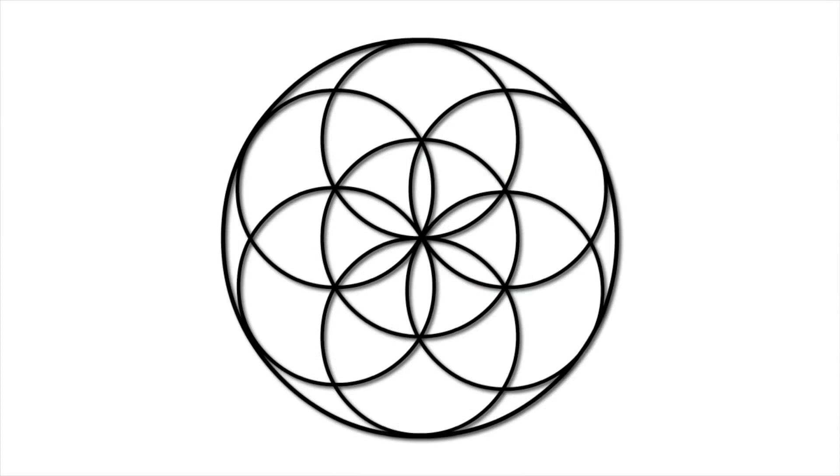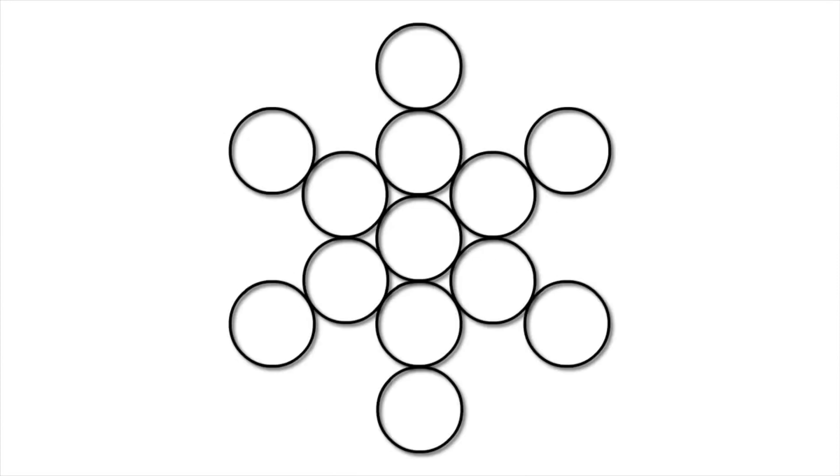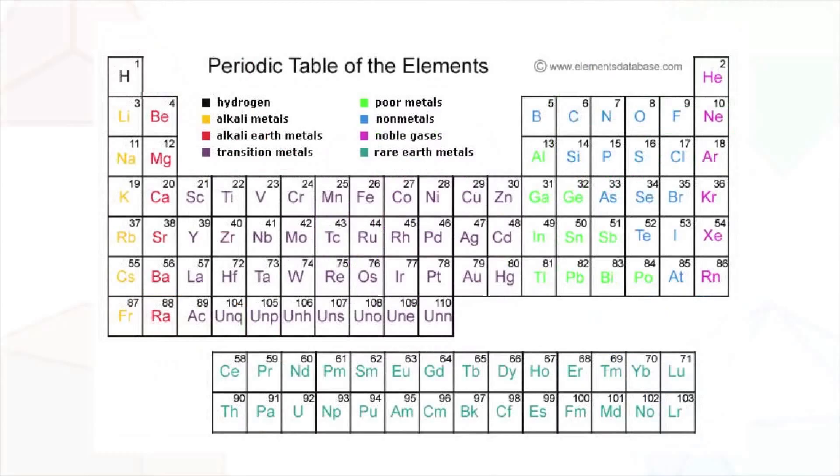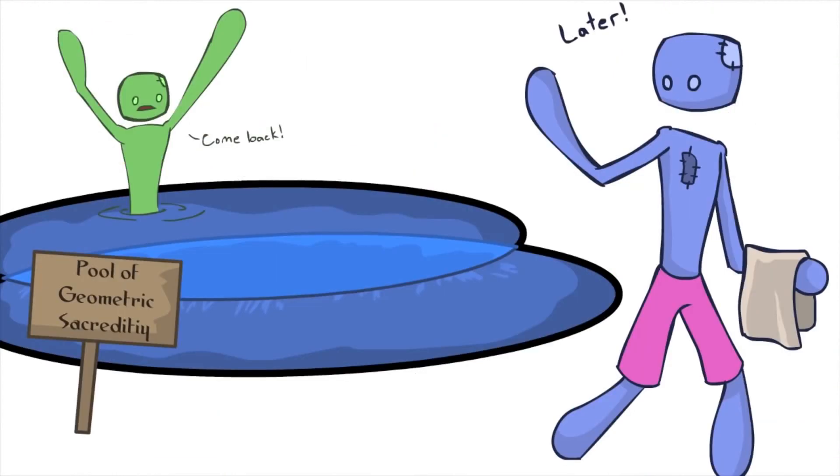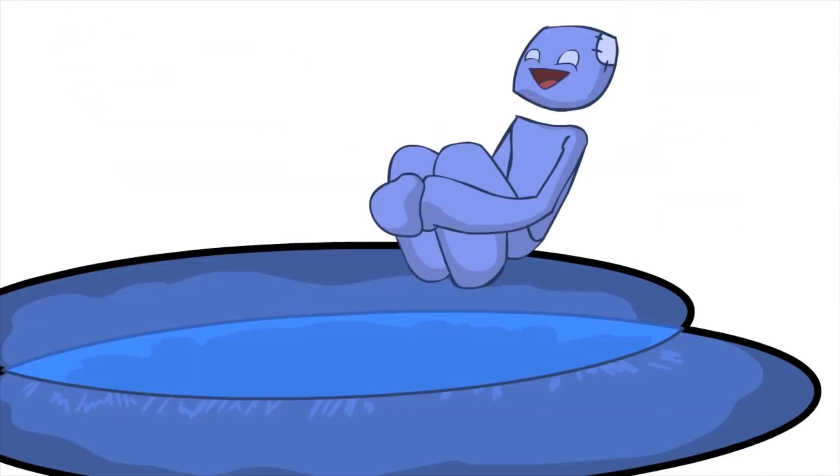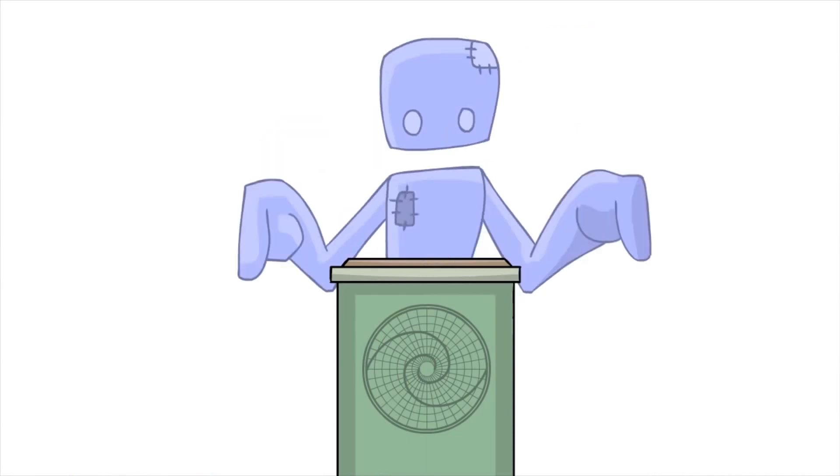We looked at the genesis pattern and how it forms the fruit of life, the pattern that all physical matter in existence comes out of. We jumped out of the sacred geometric pool for a few lessons and today we're gonna dive right back in. I've mentioned quite a few times that within the flower of life are found the music and harmonics of everything in existence. Let's find out how that works, shall we?